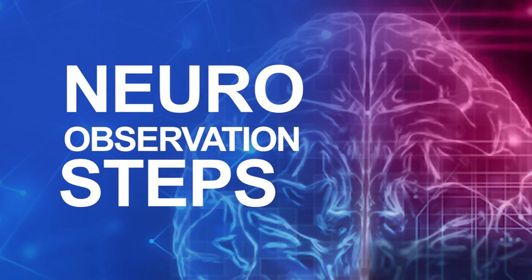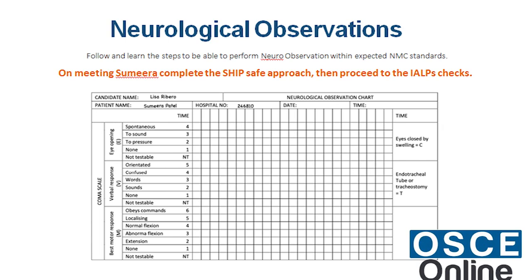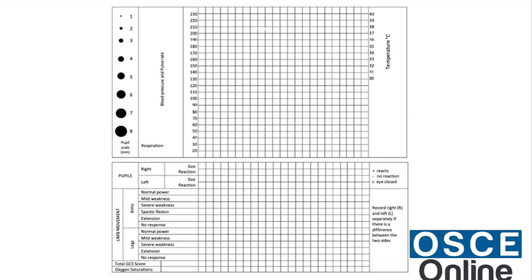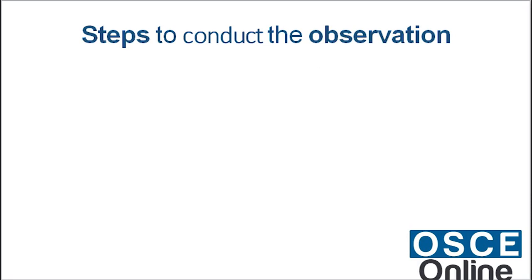Neurological observations: follow and learn the steps to perform neuro observations within expected NMC standards. On meeting the patient, complete the ship-safe approach, then proceed to the ALPS checks steps to conduct the observation.